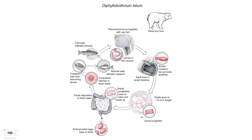What happens next is quite amazing. The egg contains a larva termed the coracidium, which resembles zooplankton — it's a round organism with cilia and is free-swimming. So at this moment in its life, Diphyllobothrium latum is a free-living worm. These small swimming stages are attractive to predaceous zooplankton, namely the copepods, which are attracted to the swimming motion of this stage.